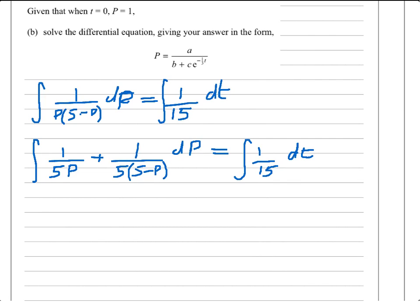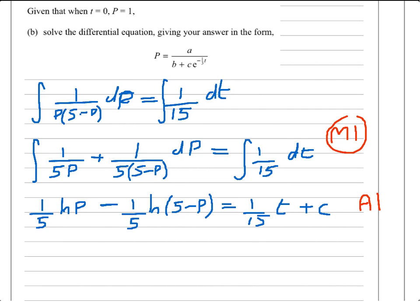1 over P, you should realize, goes to the natural logarithm of P. So this is 1 fifth times the natural logarithm of P. Now this similarly is 1 fifth the natural logarithm of 5 minus P. But just be careful, because it's a minus P in the brackets, we would divide by minus 1. In other words, there'd be a minus outside. And this is, of course, equal to 1 over 15 of t plus c. So that's actually a general solution to the equation. I've actually now done the integration.